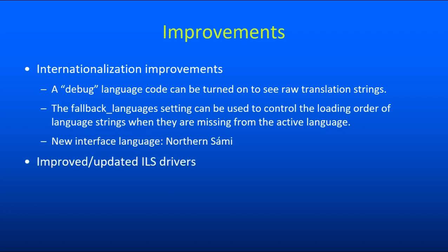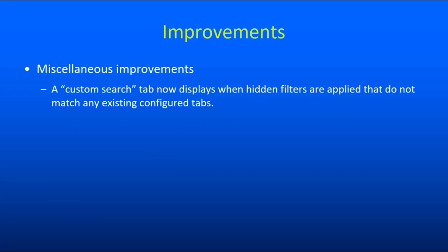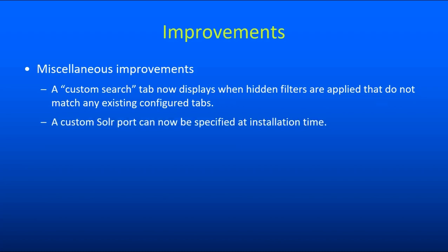There have also been improvements and updates to a few ILS drivers for Alma, Folio, and Sierra REST. So if you use these systems, check the changelog for more details. Additionally, some other miscellaneous improvements: if you have search tabs turned on with filtered tabs and you apply a hidden filter that does not match any of the tabs, you will now get a custom search tab displayed to differentiate that. This can be turned off through configuration if you don't want it.